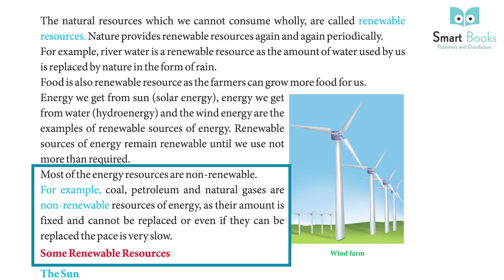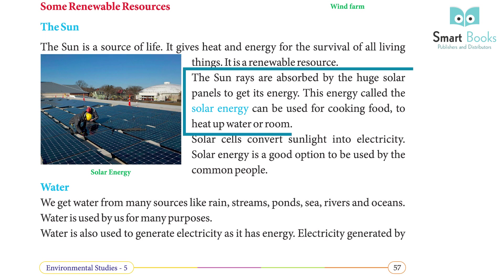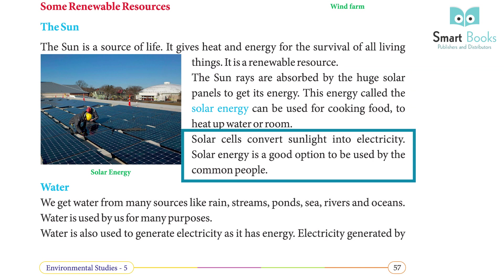The sun is a source of life. It gives heat and energy for the survival of all things. It is a renewable resource. The sun's rays are absorbed by huge solar panels to get its energy. This energy, called solar energy, can be used for cooking food, to heat up water or a room. Solar cells convert sunlight into electricity. Solar energy is a good option to be used by common people.